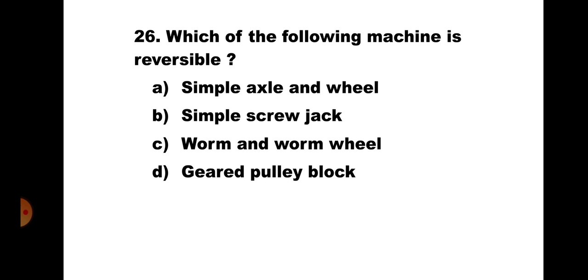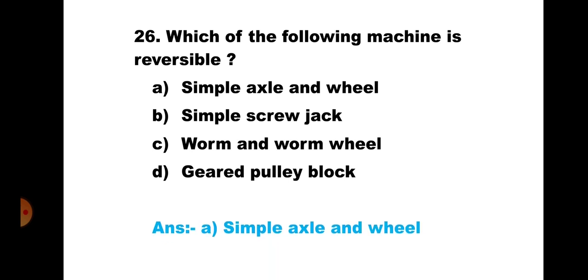Question number 26: Which of the following machines is reversible? A) simple axle and wheel, B) simple screw jack, C) worm and worm wheel, D) geared pulley block. Simple screw jack, worm and worm wheel, and geared pulley block are non-reversible machines. The reversible machine is simple axle and wheel. The correct answer is A) simple axle and wheel.